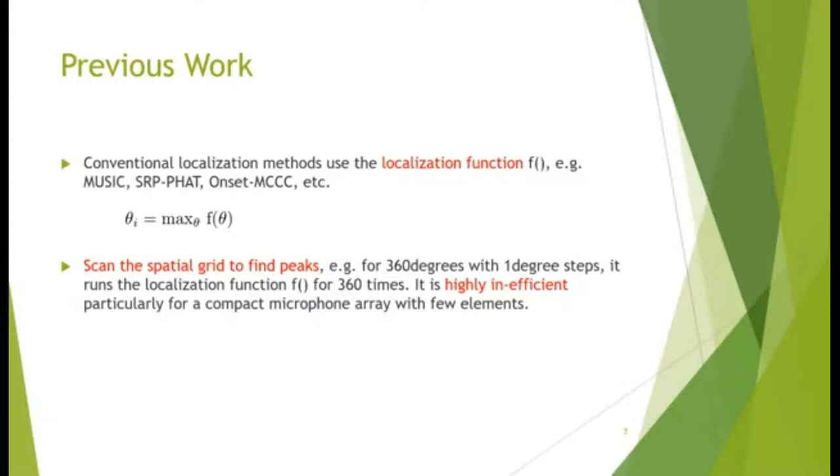Let's briefly talk about the previous work. In conventional localization methods, the localization function is used, for example the MUSIC, SRP-FET, and onset MCCC. Peaks of the localization function correspond to estimated source locations. This is not efficient, however, especially for a compact microphone array with few elements. For example, to scan 360 degrees with one degree steps, you'll run the localization function 360 times. This can be very time consuming.